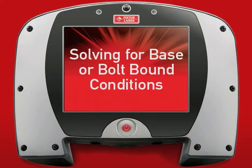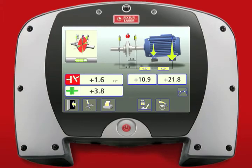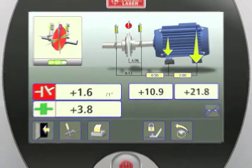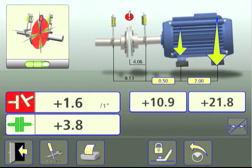Solving for base or bolt-bound conditions. During an alignment, the movable machine's feet may be determined to be base-bound or bolt-bound when there just isn't enough leeway to make the indicated adjustment.